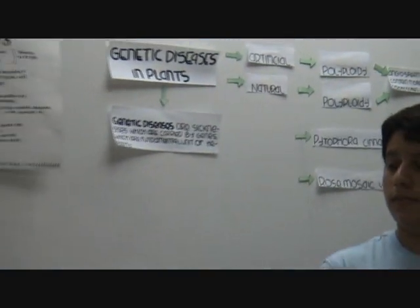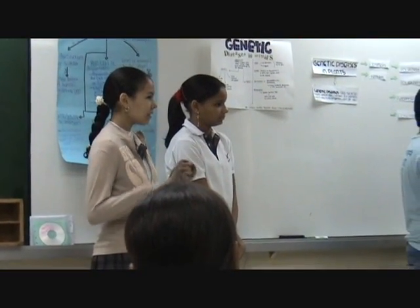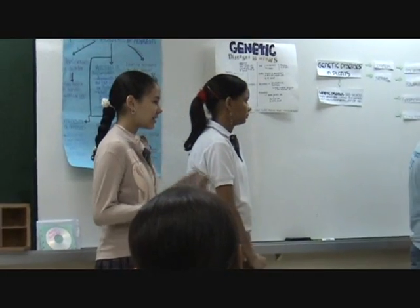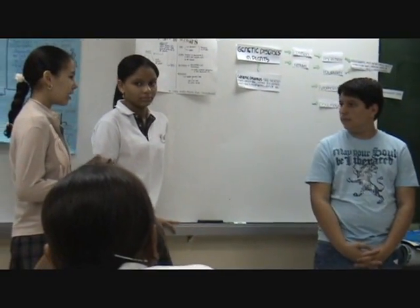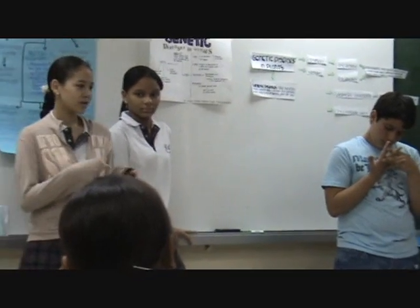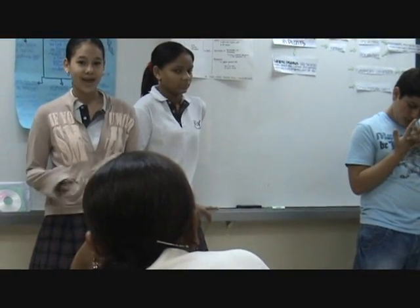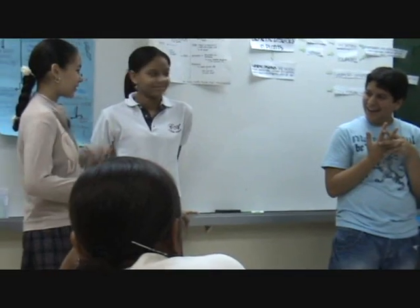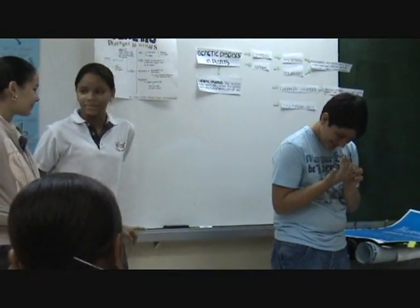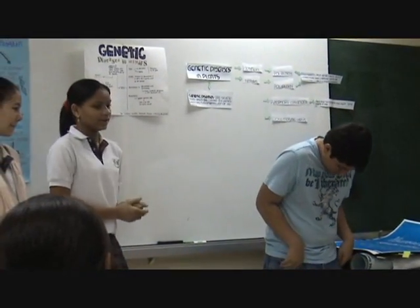Natural diseases include pythium, enemy, and the tobacco mosaic virus, because they are natural diseases caused by an abnormality in the cell. An example is polyploidy, which is transferred from the parents to the offspring.